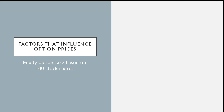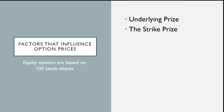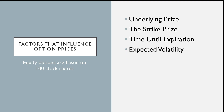Now let's discuss the factors that influence option prices. Each option contract is based on 100 stock shares when we're talking about stocks — that's where we'll start since it's the simplest way. The key factors are: the underlying price, the strike price, the time until expiration, expected volatility, and interest rates and dividends. Interest rates and dividends are less important because they're known in advance and relatively static. We'll focus on the other four.